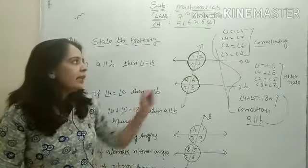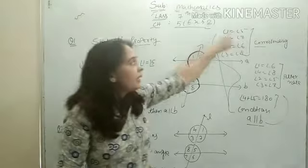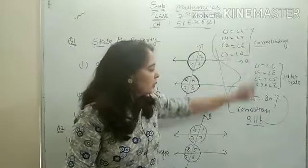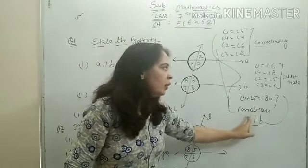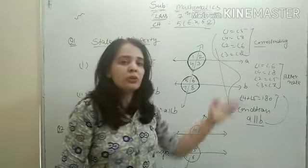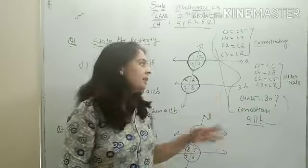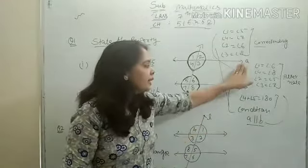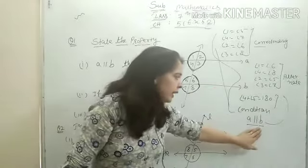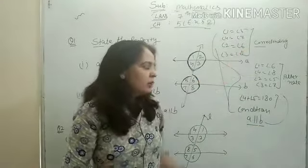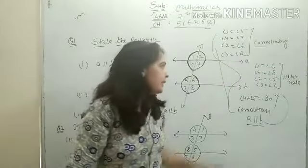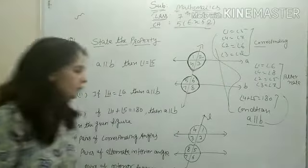Second point यह है कि अगर corresponding or alternate angles equal हैं, तो condition satisfy होती है — vice versa भी होता है। अगर यह satisfy करता है, तो lines parallel हैं। तो अब अपने exercise पर आजाओ।